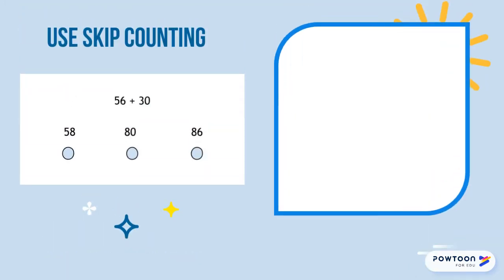Since we're adding 30 to 56 we need to count by 10s because 30 means three 10s. So we're going to start at 56 and count on our fingers three times as we count by 10s. Starting at 56: one finger — 66, 76, third finger is 86. So our answer is 86. 56 plus 30 is 86, and I see 86 right here. We got the answer.